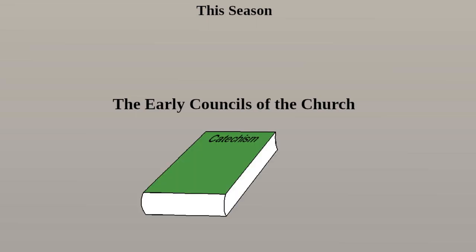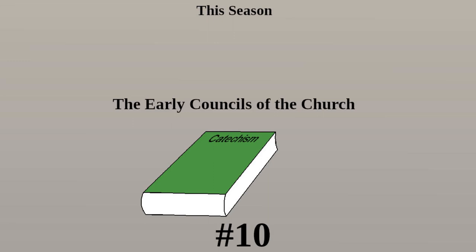This season, we're discussing the early councils of the church and how doctrine developed in those early times. Officially, there have been 21 ecumenical councils in church history, but the first 10 will be enough for this season. Today, we'll be discussing the 10th official ecumenical council, the Second Lateran Council.